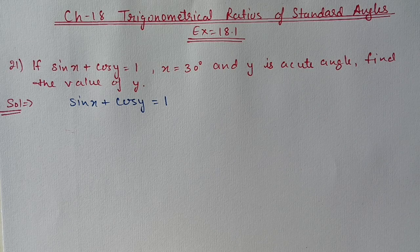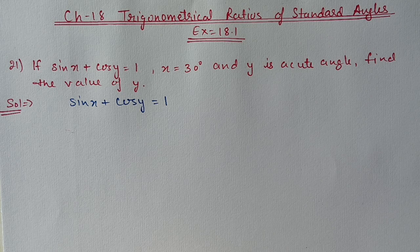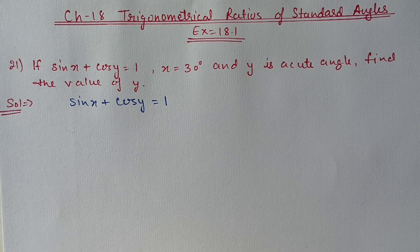Hello students, we are doing Chapter 18 - Trigonometrical Ratios of Standard Angles, Exercise 18.1. In today's video we are starting from Question 21: if sin x plus cos y is equal to 1, x value is 30 degrees and y is an acute angle, then find the value of y.